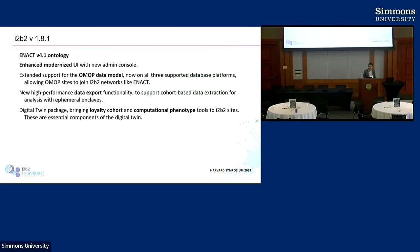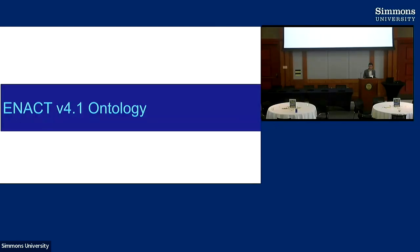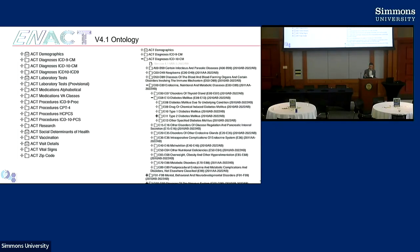We have a brand new user interface, written by a great group of people. In December, that new UI became available and it's been enhanced significantly in the new release. We added support for the OMOP data model, which I'll talk about more in a couple of slides. We've also added support for data export, which is the beginning of a direction in i2b2 to support small exports for deeper analysis on cohort data. The digital twin package, which Griffin and Sean and others talked about today, is also available now with i2b2 1.8.1.